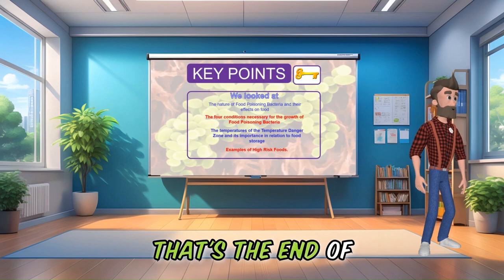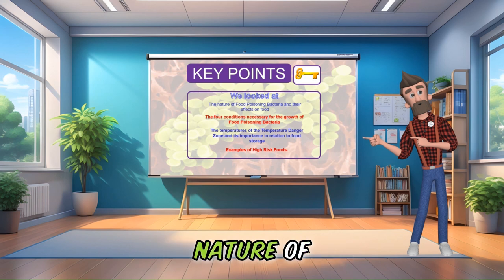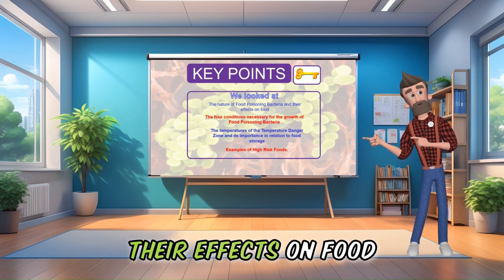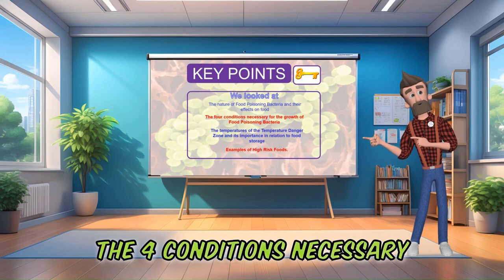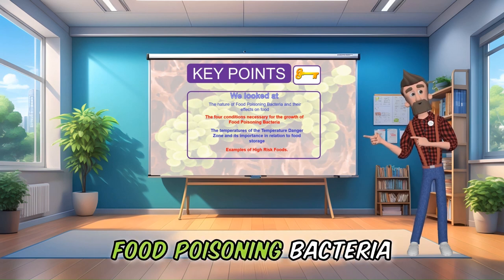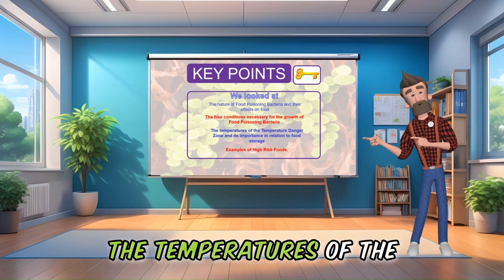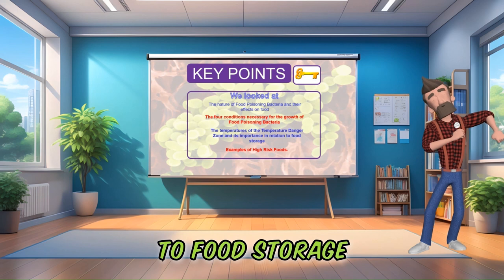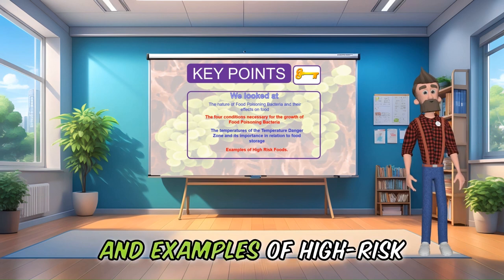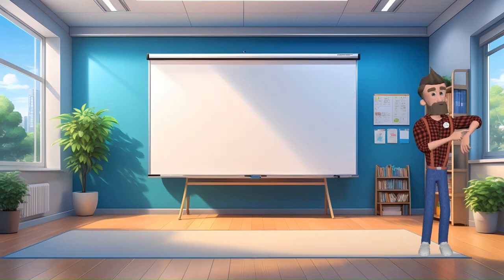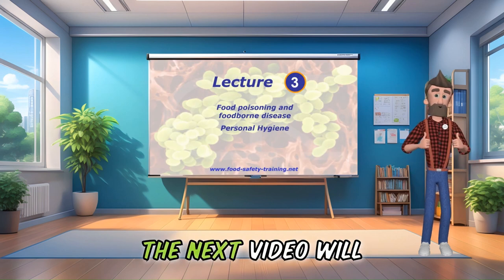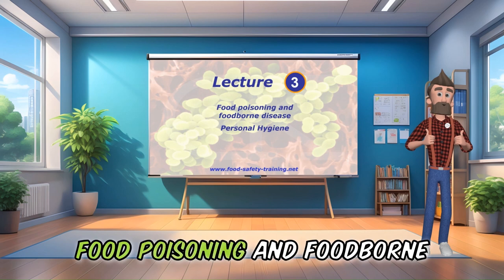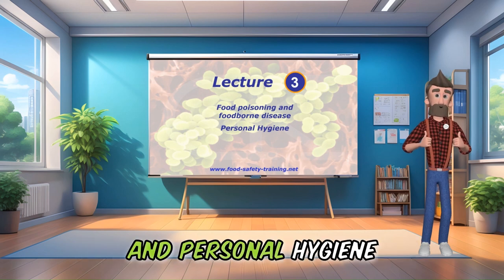That's the end of Lecture 2. We looked at the nature of food poisoning bacteria and their effects on food, the four conditions necessary for the growth of food poisoning bacteria, the temperatures of the temperature danger zone and its importance in relation to food storage, and examples of high-risk food. Thanks for watching. The next video will be the start of Lecture 3: food poisoning and foodborne disease, and personal hygiene.